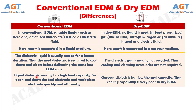Number 4: In conventional electric discharge machining, liquid dielectric usually has high heat capacity, so it can cool down the tool electrode and workpiece electrode quickly and efficiently. Whereas in dry electric discharge machining, the gaseous dielectric has low thermal capacity, and thus cooling capability is very poor.